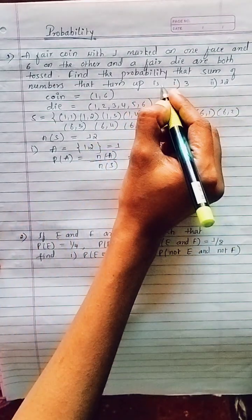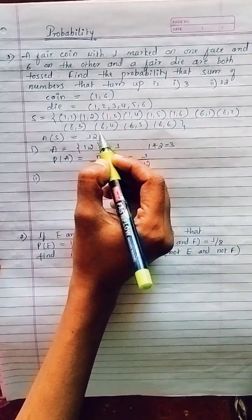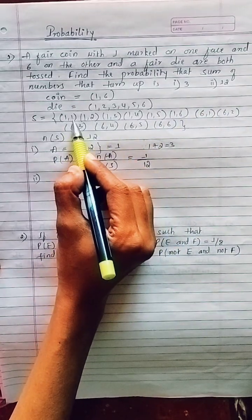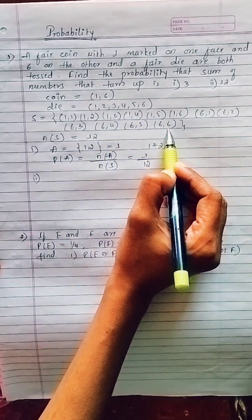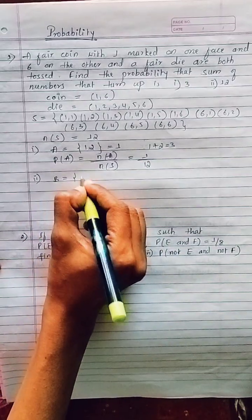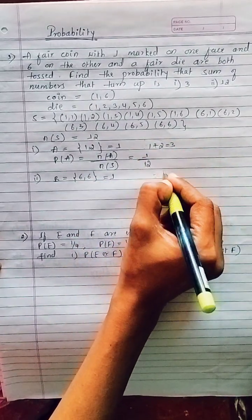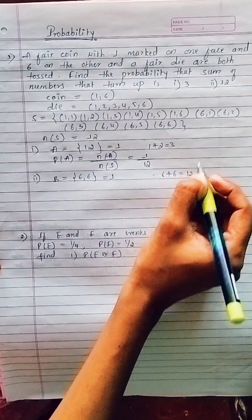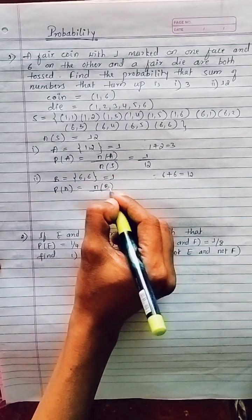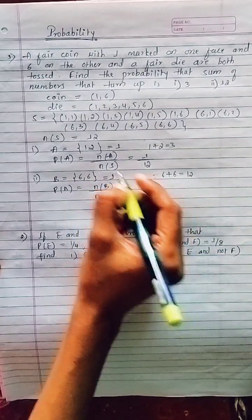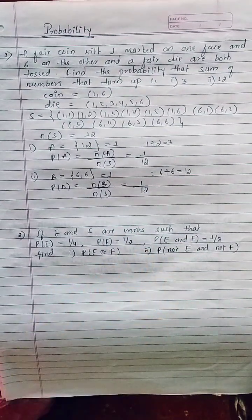The second sub-question asks for the probability that the sum equals 12. Checking the pairs: 1+1=2, 1+2=3, and so on — only 6+6=12. Let event B be this outcome. Only one pair gives us 12. So probability of B = 1 / 12. The answer for both sub-questions is 1/12.